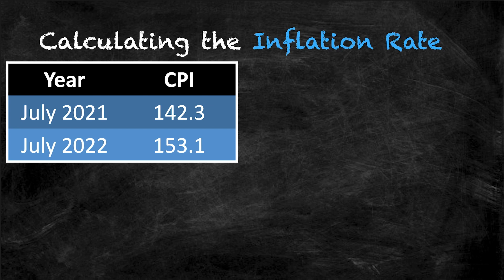A value for the CPI of 153.1 in July of 2022 tells us that the price level was 53.1% higher than the base year, which in Canada is actually 2002. The 12-month inflation rate isn't concerned with the base year, however. It only takes into consideration the increase from the previous year.